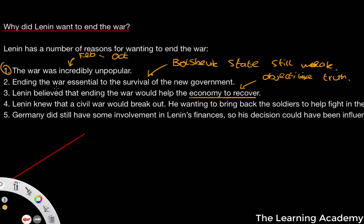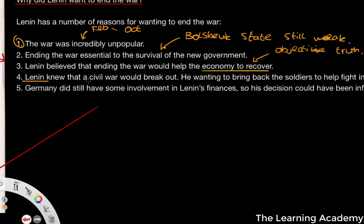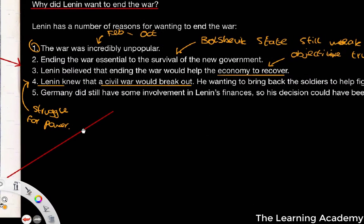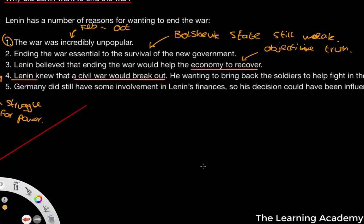Lenin also predicted that a civil war was going to break out — a struggle for power. And he was right; there was a Russian civil war, which we'll talk about in the next couple of videos. He wanted as much strength as possible, bringing back soldiers to help fight in the civil war. He didn't want to be on an uneven footing when it came to consolidating the Bolshevik state and the Soviet Union.